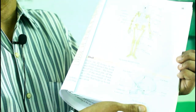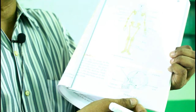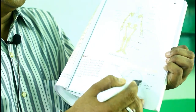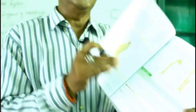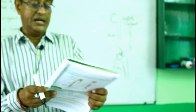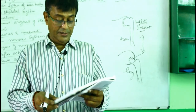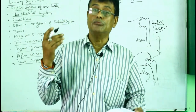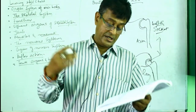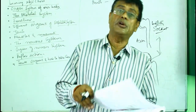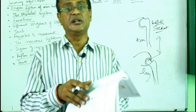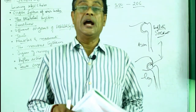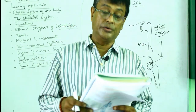These are the immovable joints present in the skull. In movable joints we have the hinge joint, ball and socket joint, pivot joint, and gliding or sliding joint. There are also immovable joints.